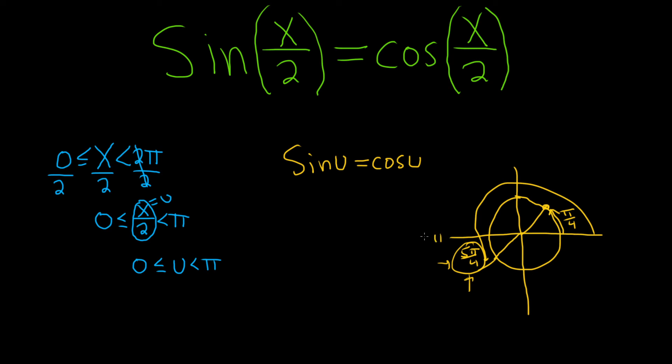However, this is π, and this is 0. So we don't want this angle. The only angle we want is π over 4. That means that u must be equal to π over 4.